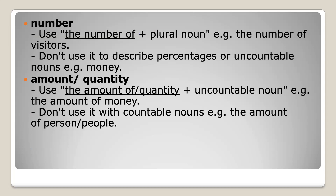Now let me give you some insights on the words and phrases commonly found in writing task one. General training candidates should also pay attention because phrases like 'the number of,' 'the quantity of,' and 'the amount of' will still appear in your task two, and you need to make good use of them there as well. Although this is really indicated for the academic module, you can still learn a thing or two if you stay as I cover the vocabulary for writing task one academic.